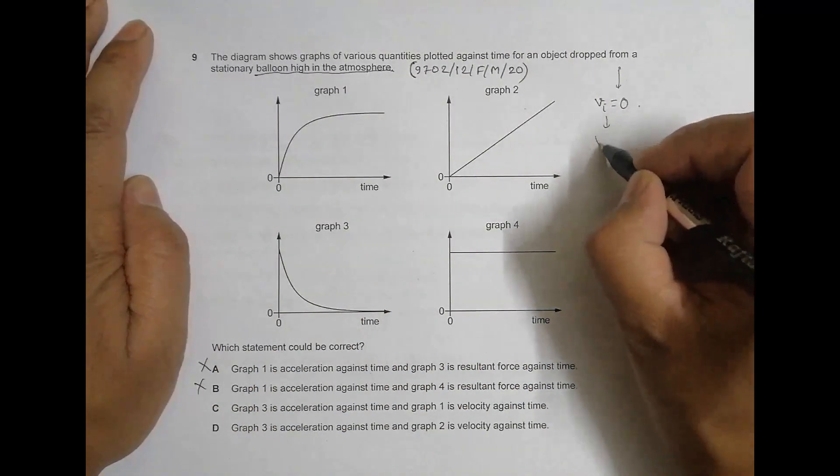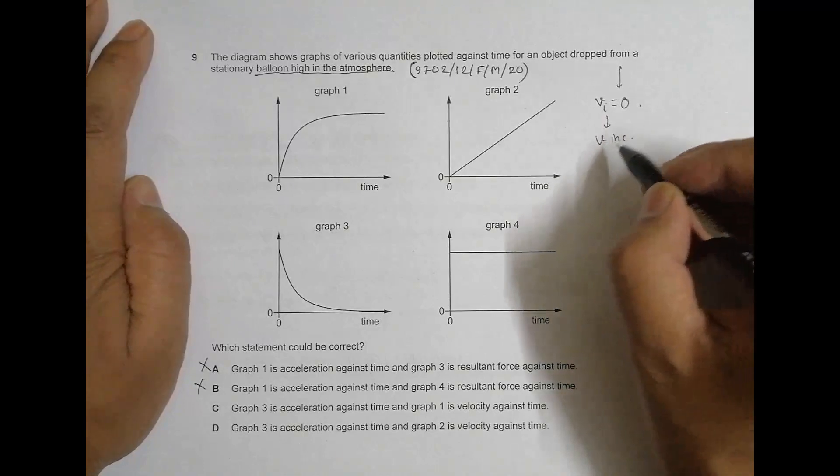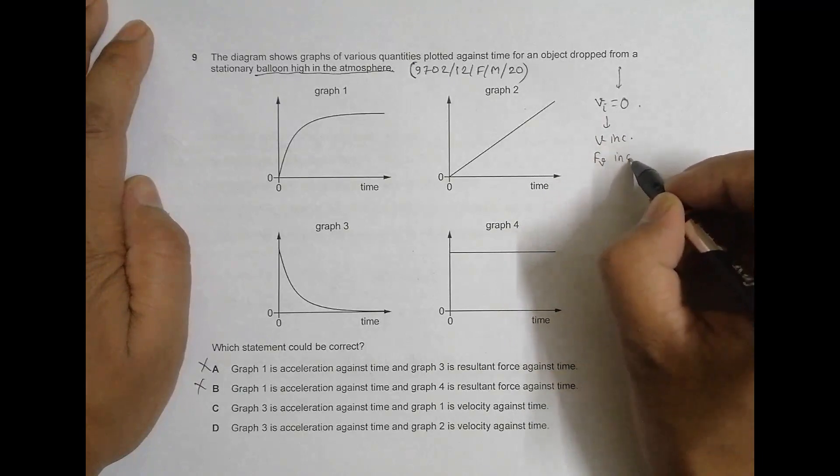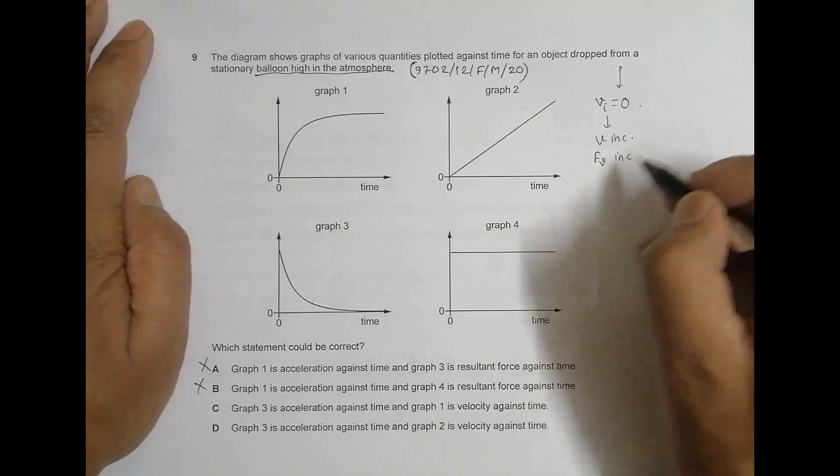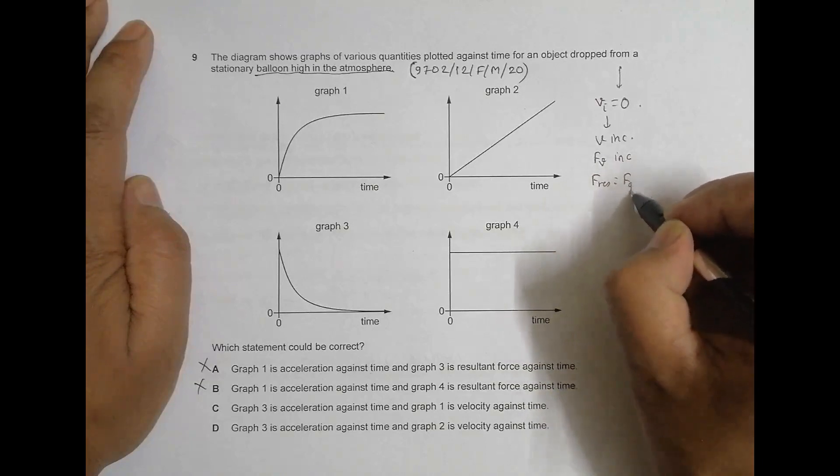Initially velocity equals zero, then V starts to increase. But what happens is when V increases, the viscous force or the opposite force also increases.